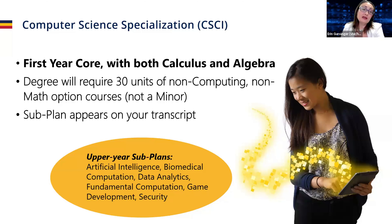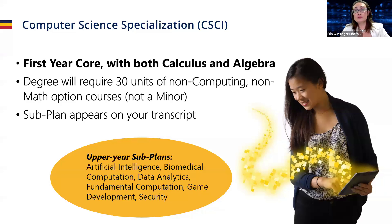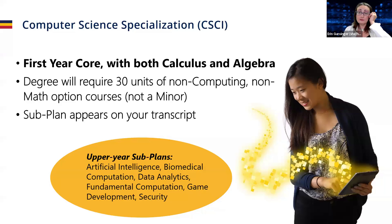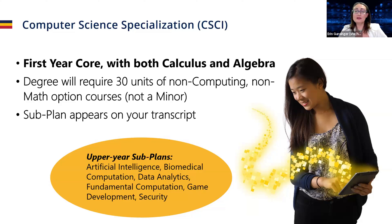For the computer science specialization, you're choosing one of those six subplans, and the subplans do appear on your transcript — it will say computer science specialization with, for example, an artificial intelligence subplan. This degree requires 30 units of non-computing, non-math option courses. This is a breadth requirement that was part of the KIPPS accreditation. Although we're no longer pursuing that accreditation, the curriculum hasn't changed and this breadth requirement still exists, which allows more context and a more well-rounded education.